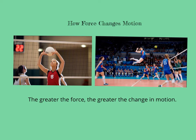Imagine a game of volleyball. In order for the game to start, the player has to use enough force to hit the ball over the net, but not too much force or else the ball could go out of bounds. A player will also use force to change the direction of the ball. A player can set the ball for a teammate or spike the ball, which causes it to move so fast that no one on the opposite team can hit it. A spike requires more force than a set because there is a greater change in motion of the ball.